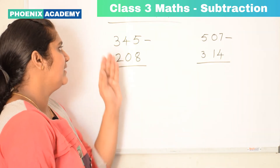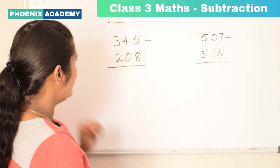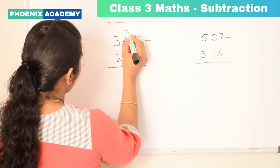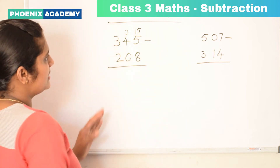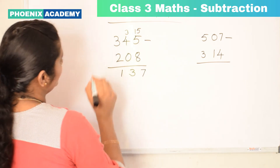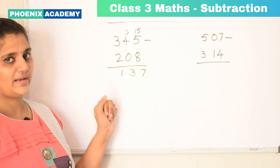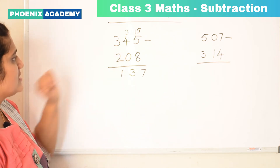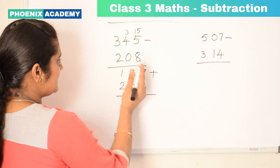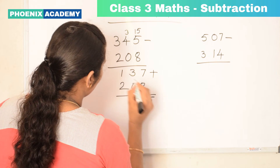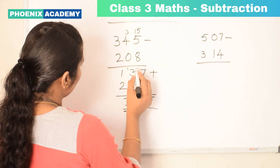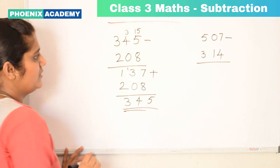Let's subtract 345 minus 208. 5 minus 8: we cannot subtract 8 from 5, so we borrow from the 10's place. So this 4 becomes 3 and 5 becomes 15. Then 15 minus 8 is 7. 3 minus 0 is 3 itself. 3 minus 2 is 1. To check our answer, we add the difference to the smaller number: 137 plus 208. 8 plus 7 is 15, write 5 and carry 1. 3 plus 1 plus 2 is 6... wait: 3 plus 0 is 3, plus 1 carry is 4. Then 1 plus 2 is 3. We got 345, the bigger number, so our answer is correct.